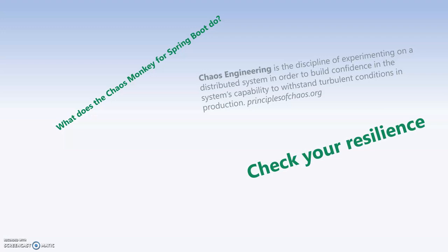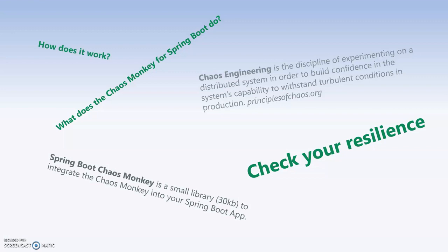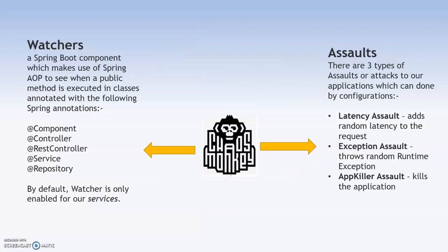We are going to check the resilience of our project and how it works. Spring Boot Chaos Monkey is an integration of Chaos Monkey along with Spring Boot — it's a small library of around 30 KB that is used to integrate Chaos Monkey into your Spring Boot application.